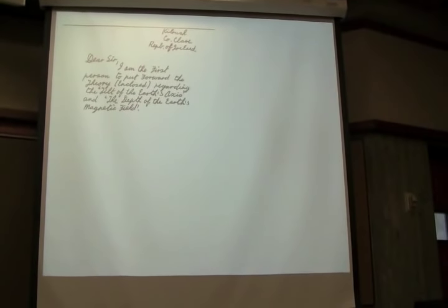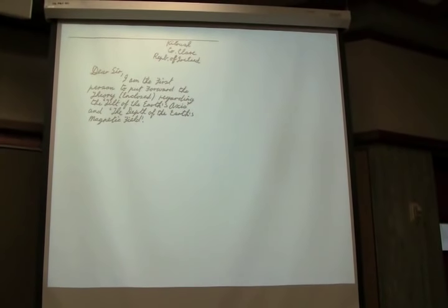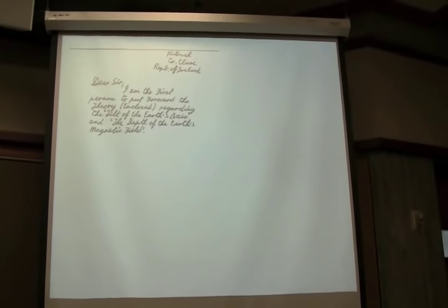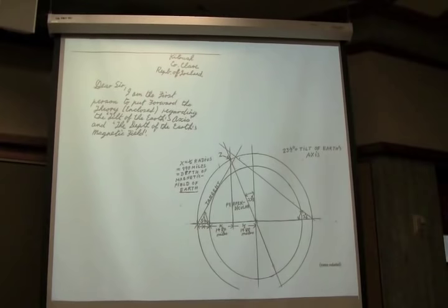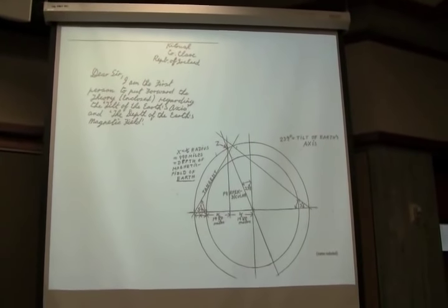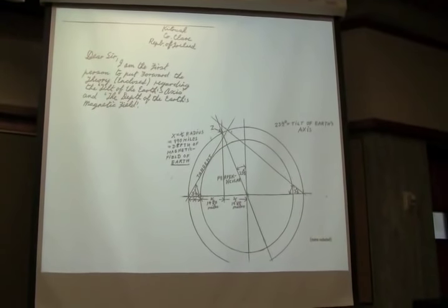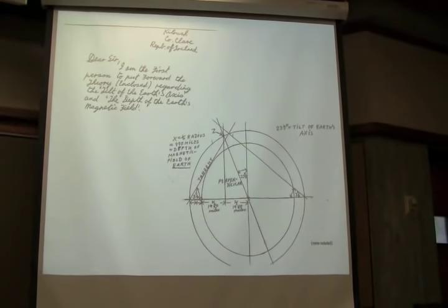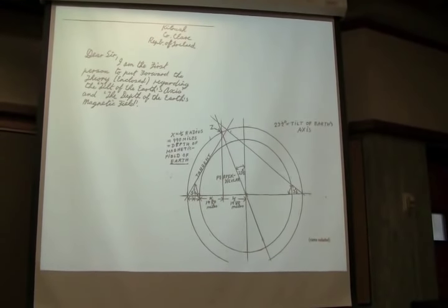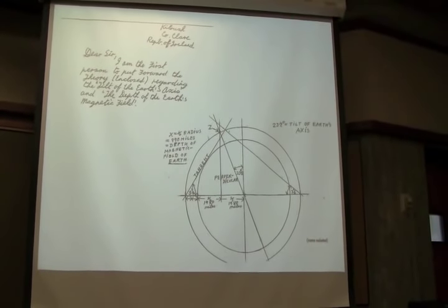Also, we had this sent to us by a guy in Ireland. This is the entire note, by the way, that was sent to us. It says, I am the first person to put forward a theory, enclosed, regarding the tilt of the Earth's axis and the depth of the Earth's magnetic field. There it is. Great. I have no idea what he's trying to get at. But it looks nice. That's another thing we'll notice about these theories, that they often have very sophisticated aesthetic properties, but scientifically, they're completely out of focus.